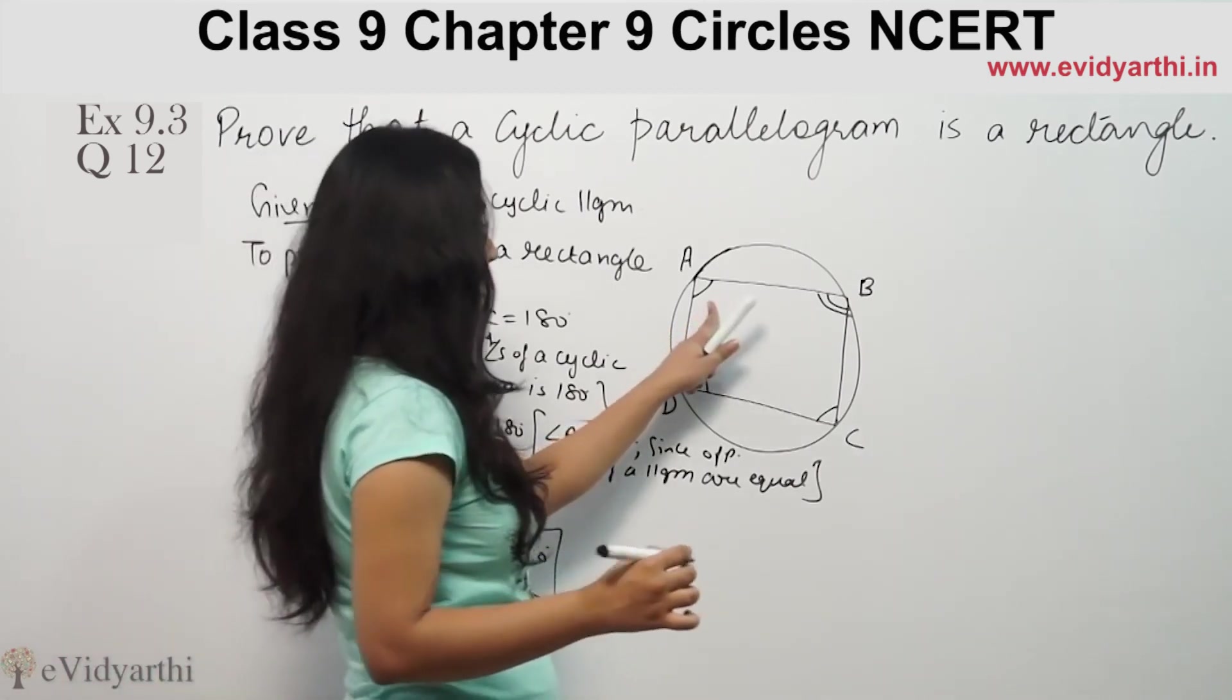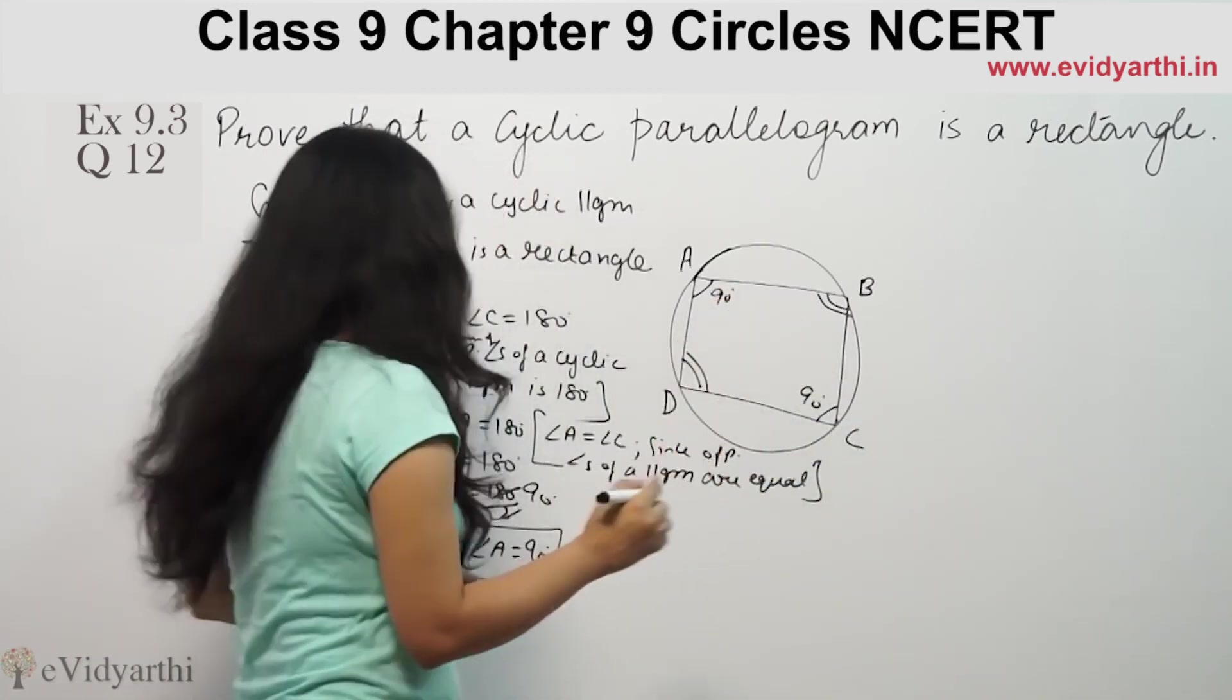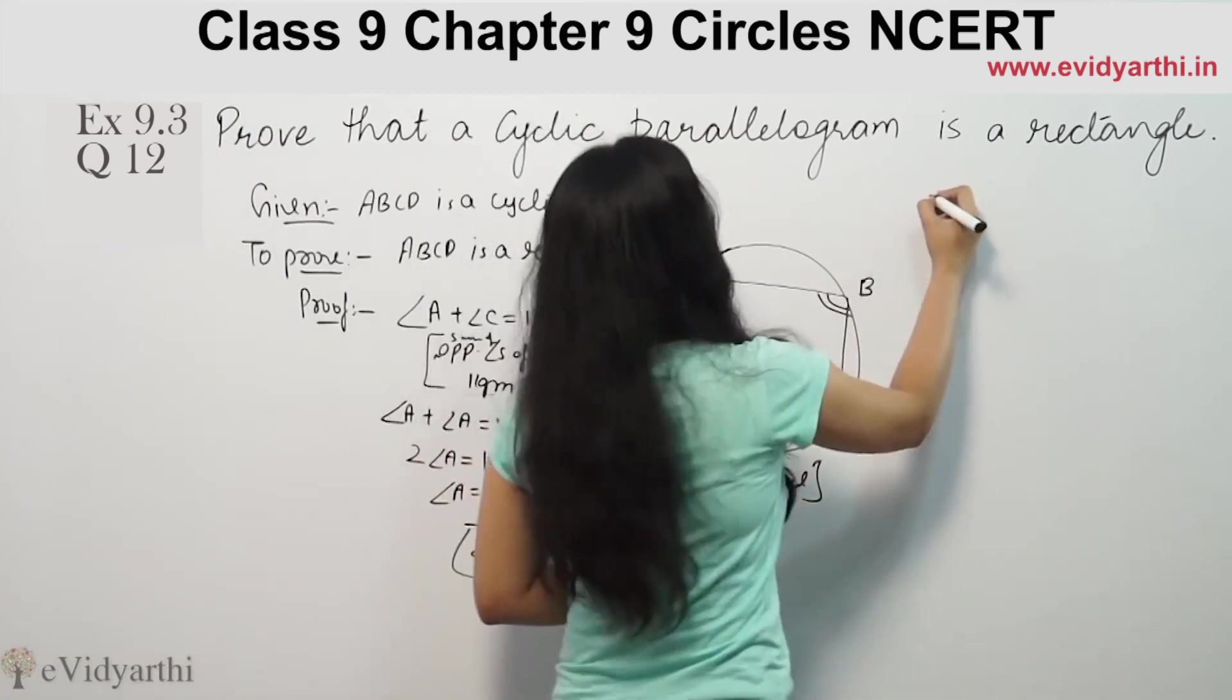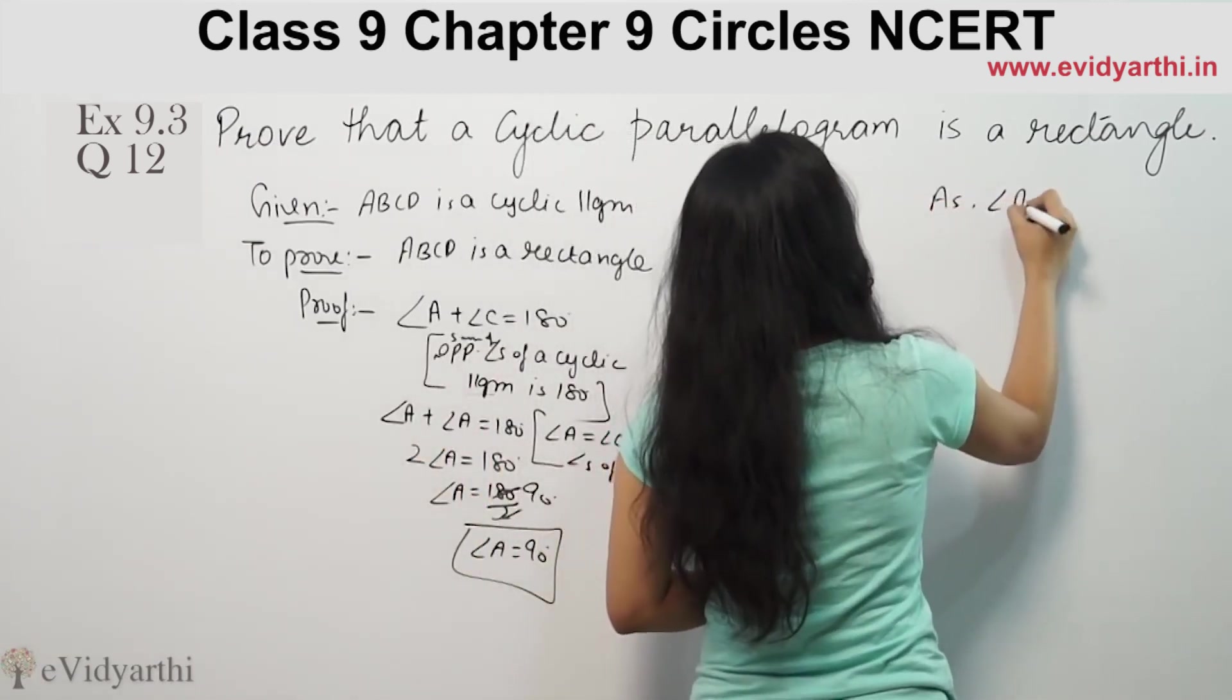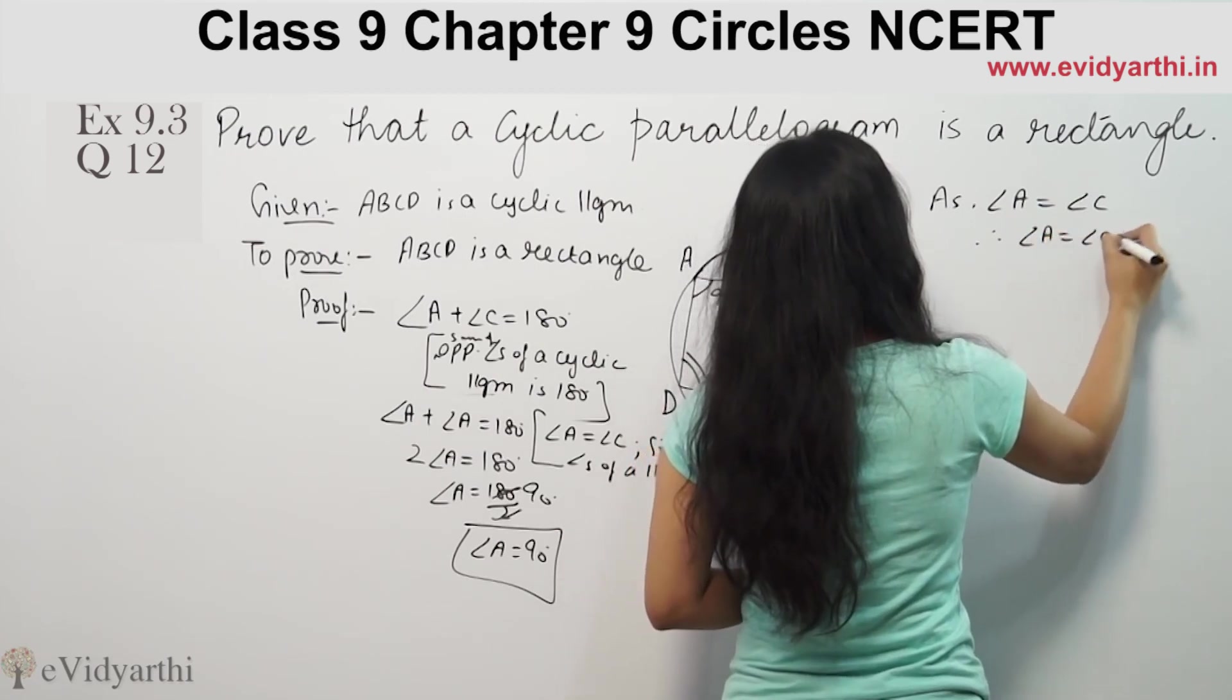So if angle A is 90, then angle C will be 90 because they are equal. And angle A is equal to angle C, therefore angle A equals angle C equals 90 degrees.